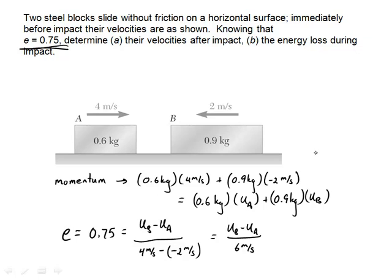So let's set these up. So before the collision, I have 2.4 kilogram meters per second minus 1.8 kilogram meters per second. So that's 0.6 kilogram meters per second. So 0.6 kilogram meters per second equals 0.6 kilogram u_a plus 0.9 kilograms u_b. You notice I don't know anything about the sign of u_a and u_b. So I assume that they're both positive.